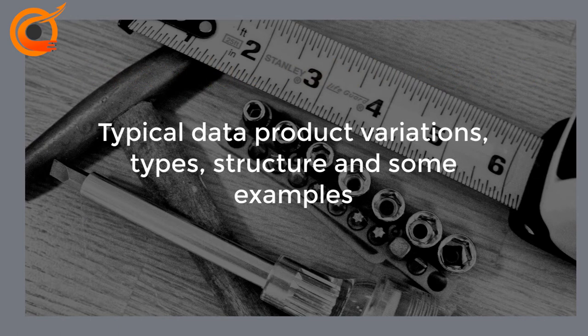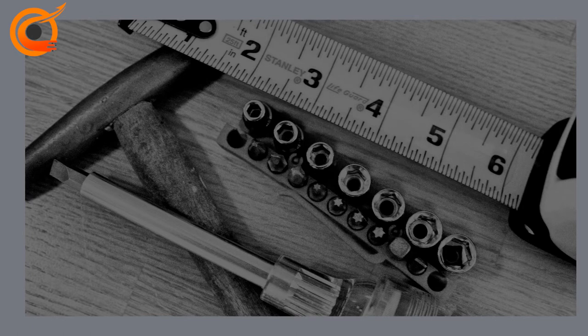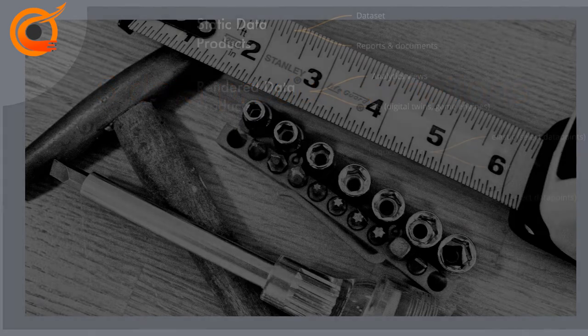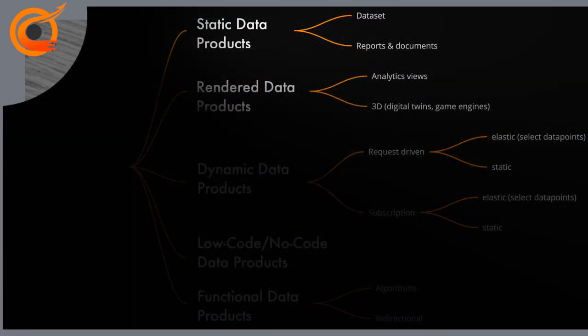Now let's have a deeper look at what are typical data product variations, types, structure, and some examples. One way to see data product types is to divide them into five categories: static, rendered, dynamic, low-code/no-code, and functional data products. An example of static data products is a dataset, which is the most common sharing format in open data.